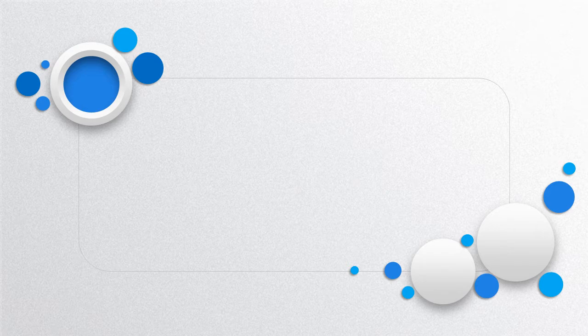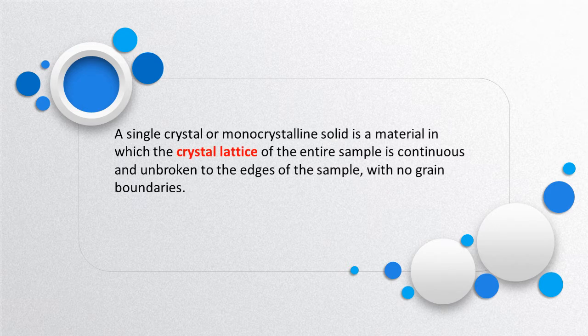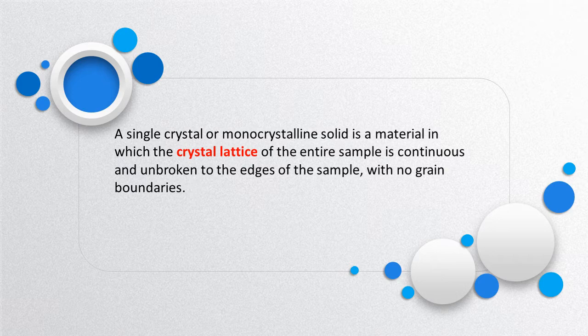A single crystal or monocrystalline solid is a material in which the crystal lattice of the entire sample is continuous and unbroken to the edges of the sample, with no grain boundaries.